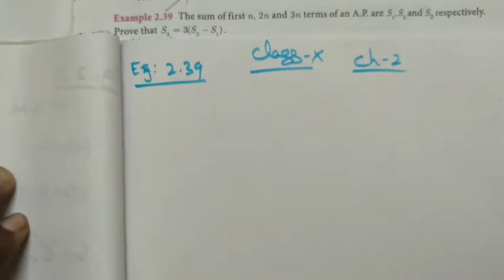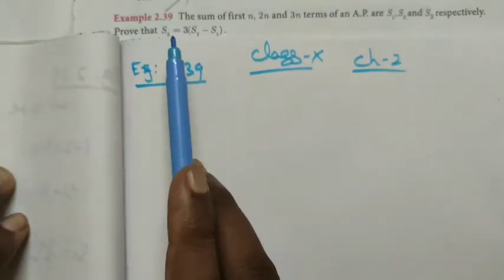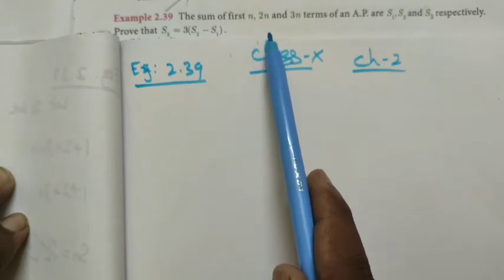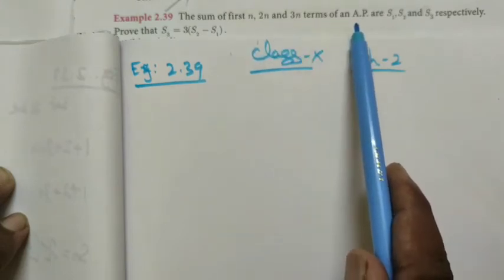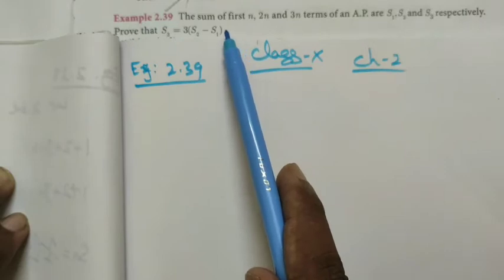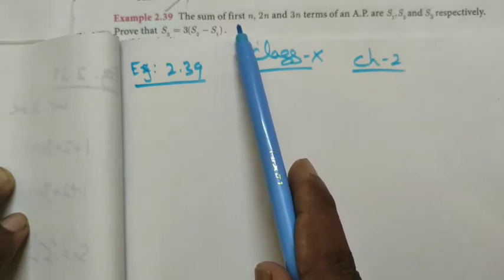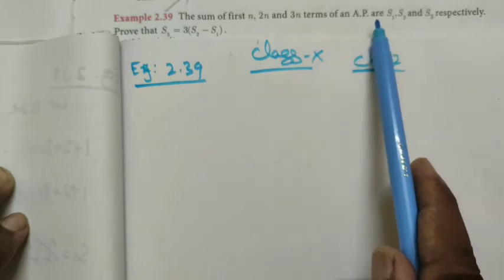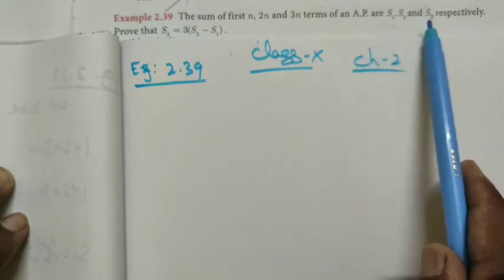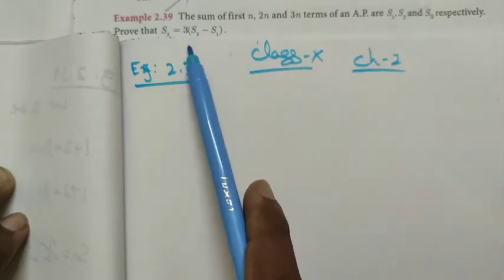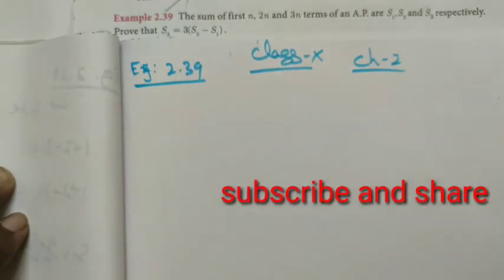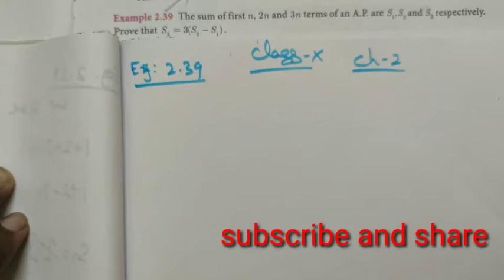Hi students, Class 10 Chapter 2 Example 2.39. The sum of the first n, 2n and 3n terms of an AP are S₁, S₂, and S₃ respectively. Prove that S₃ is equal to 3 times S₂ minus S₁.